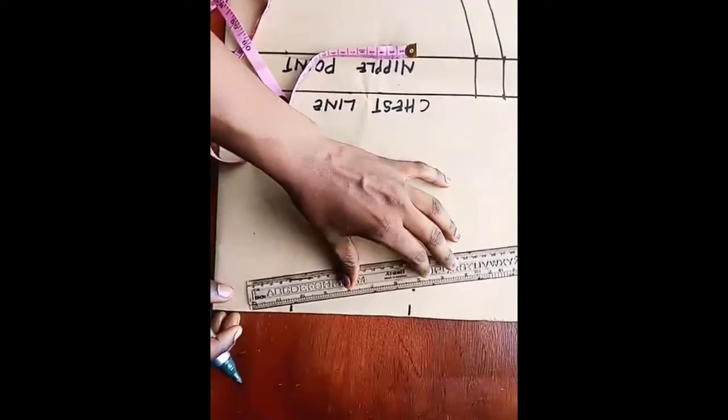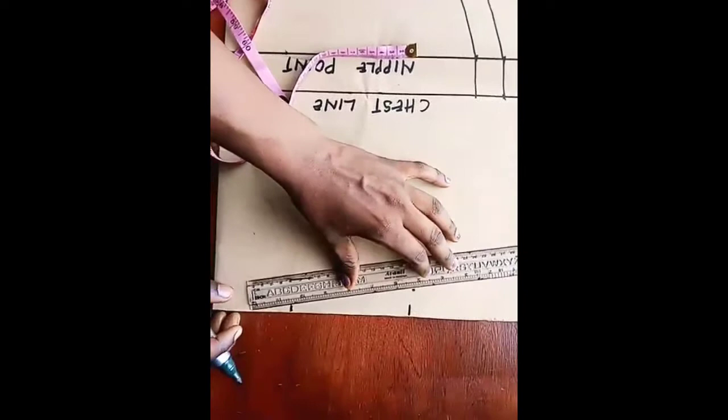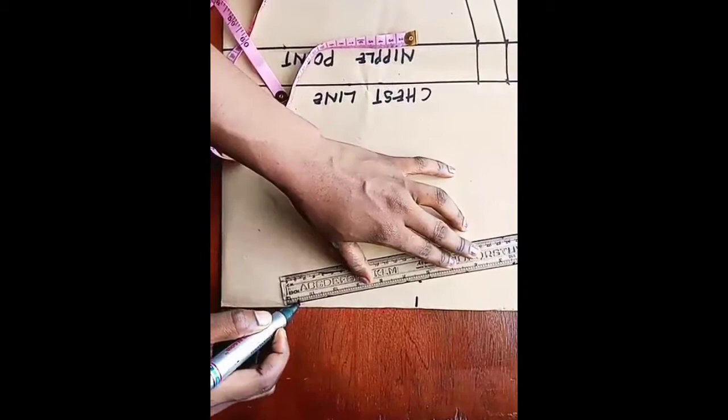Then on this A's I'll be coming down by 1 inch. So I'll be joining it from here down to my 1 inch. So I'll be drawing like this.